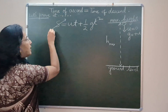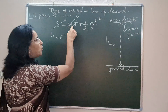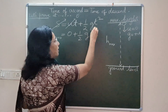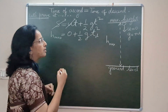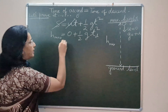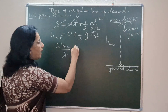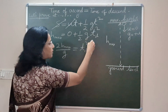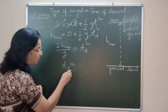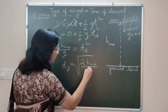Distance travelled is h_max and initial velocity is zero, so zero times anything is zero, giving h_max = ½g·td², where td is the time of descent. On cross multiplying, we get 2h_max/g = td². So the final mathematical expression for time of descent is td = √(2h_max/g).